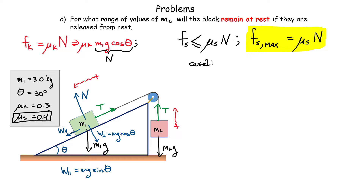For the maximum value of m2: as I add mass to the hanging block, it tends to pull m1 up the ramp, so static friction acts down the ramp opposing that tendency. As I keep adding mass, the static friction force increases until it reaches its maximum value. If I add even one more gram beyond that, the system will start to move because the forces can no longer balance.